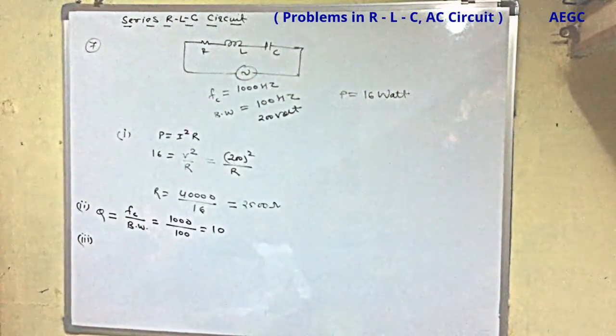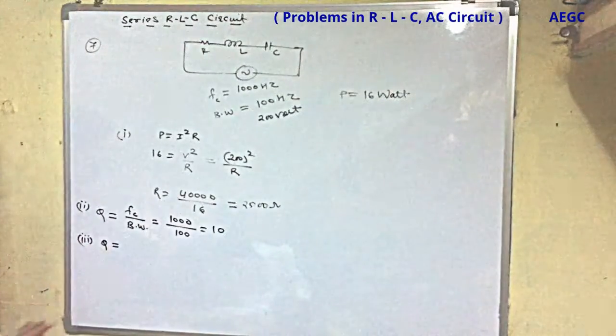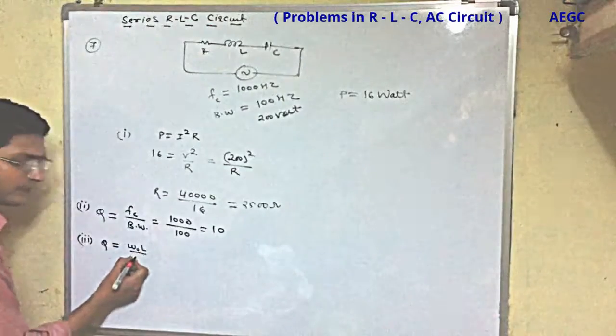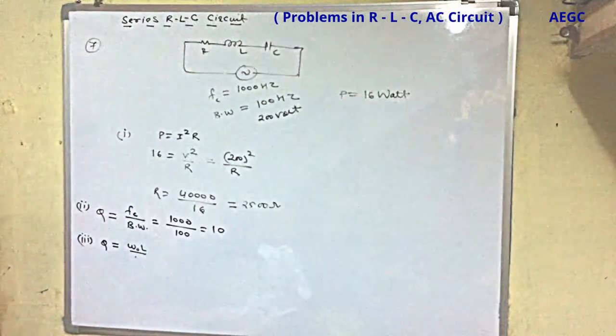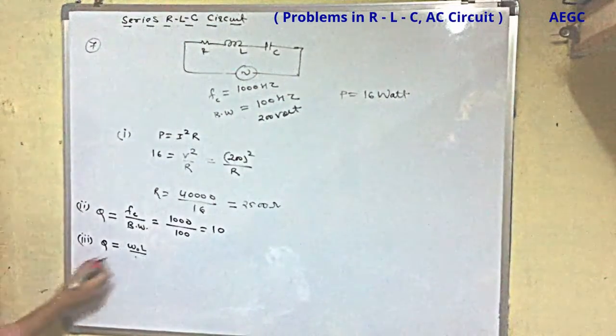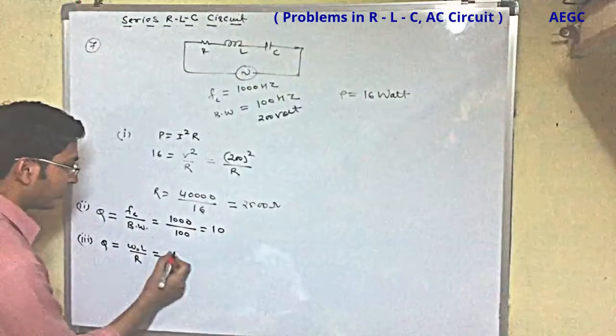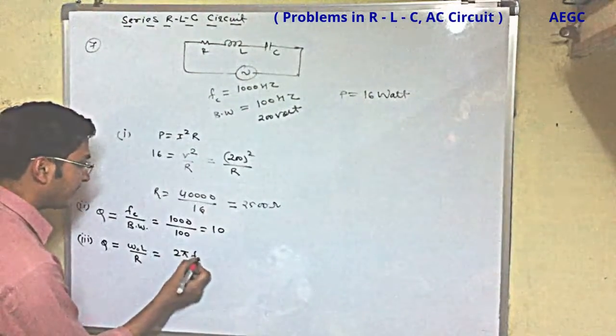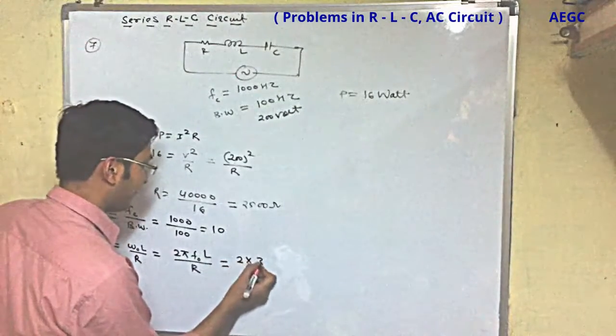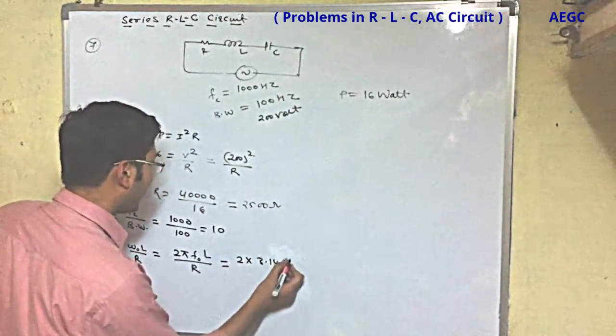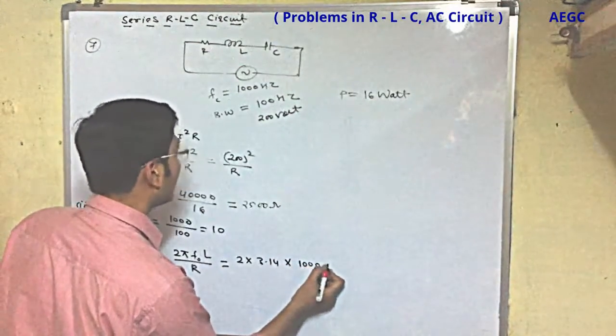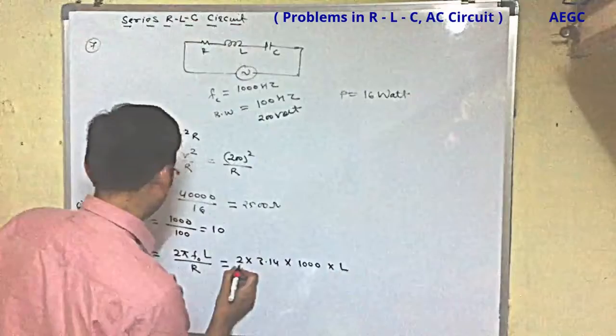Quality factor has a definition. The definition involves L. Omega naught L by R. I have proved this: omega naught L by R equals 2π f naught L by R. So Q = 2π × 1000 × L divided by R.